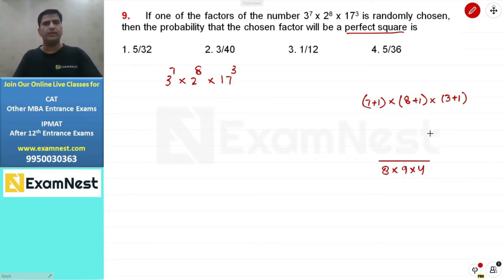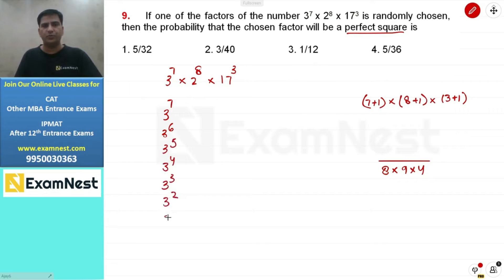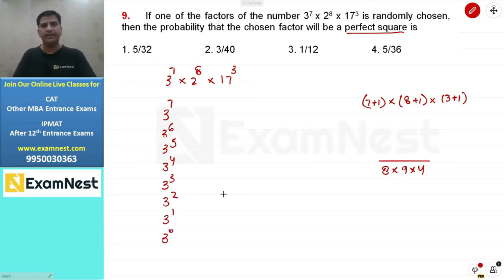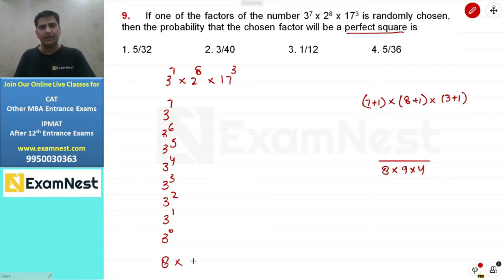Now here is the plus-one logic. For the prime 3, raised to the power 7, the valid even powers are: 3 to the power 6, 3 to the power 4, 3 to the power 2, and 3 to the power 0 — that is 4 favorable values. For 2 raised to the power 8, the valid even powers range from 2 to the power 8, 6, 4, 2, and 0 — giving 5 values. For 17 raised to the power 3, the valid even powers are 17 to the power 2 and 17 to the power 0 — giving 2 values.